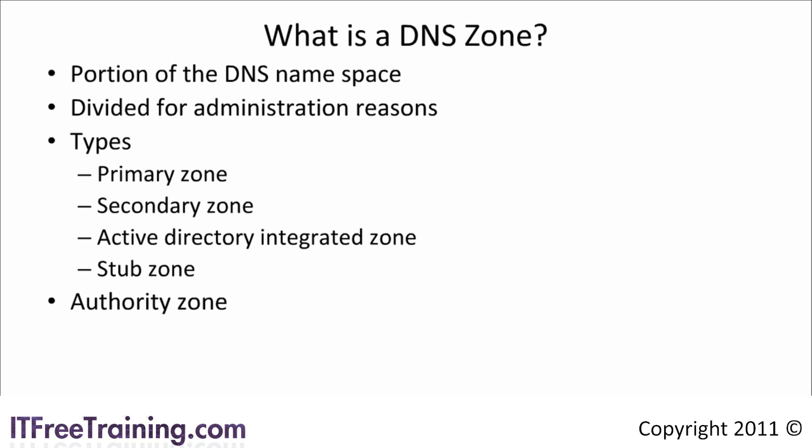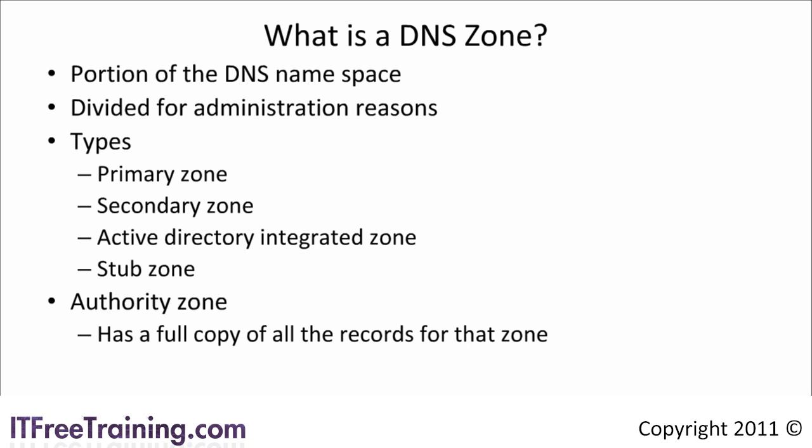An authority zone is a zone that has a full copy of all the records for that zone. When you attempt to resolve a name to an IP address, your DNS server will attempt to find an authority zone for that address. The authority zone has all the records for that zone and thus can answer questions about it. Primary, secondary and active directory zones contain all the DNS records for that zone and thus are authority zones. Stub zones only contain resource records that can direct requests to another server to be resolved.